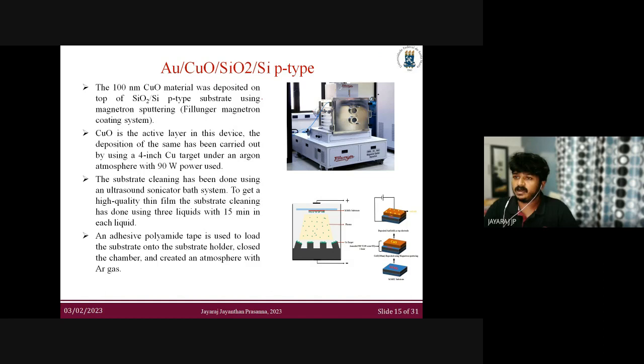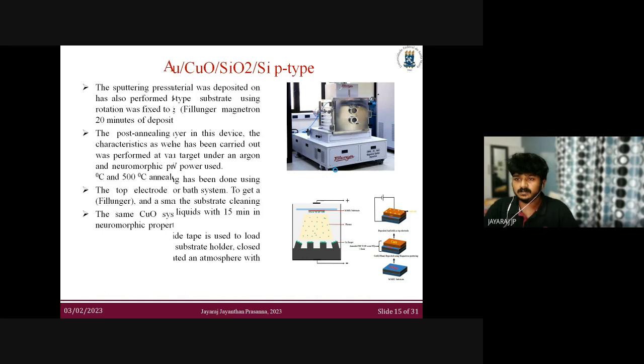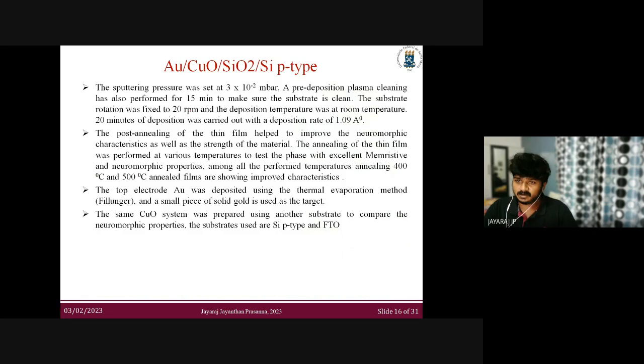I used a DC magnetron sputtering system for the fabrication of the copper oxide device. The substrate is silicon/silicon dioxide p-type. The copper oxide thickness is approximately 100 nanometers. I used a four-inch copper target under an argon atmosphere with 90 watts power. Before deposition, I performed standard cleaning using an ultrasonic sonication bath. The substrate rotation was set to 20 rpm. The deposition was done at room temperature over approximately 20 minutes.